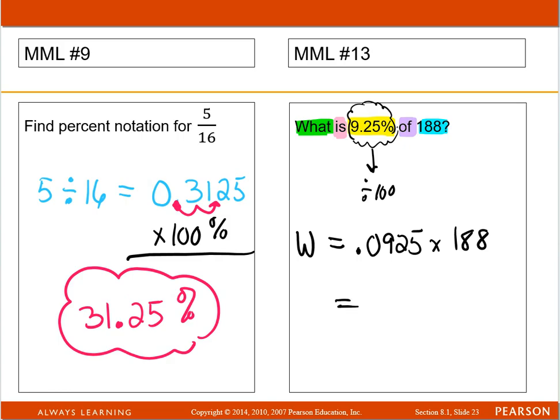So all you have to do in this one is multiply. So grab your handy dandy calculator and do the multiplication. And I get 17.39. Now think about this. They only want 9.25%. That's less than 10% of 188 objects. I'd only have about 17 of them. That's not much. 9% is not much.